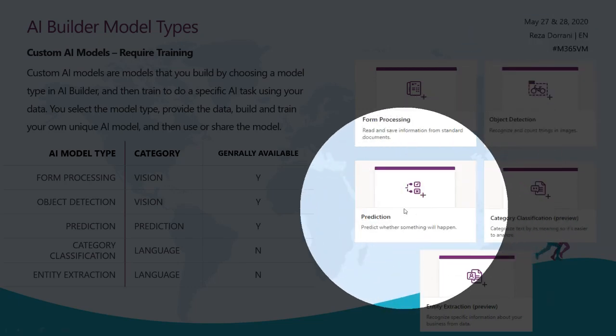The third option is the prediction model, which predicts what is going to happen and provides an output in yes/no fashion. The prediction model is also generally available and it can only predict data that is available in the Common Data Service. So if you want to leverage the prediction model, your data has to live in CDS. At the Microsoft Business Application Summit two weeks ago, more enhancements were announced for the prediction model and there is a full demo video available — I highly recommend you check that out.